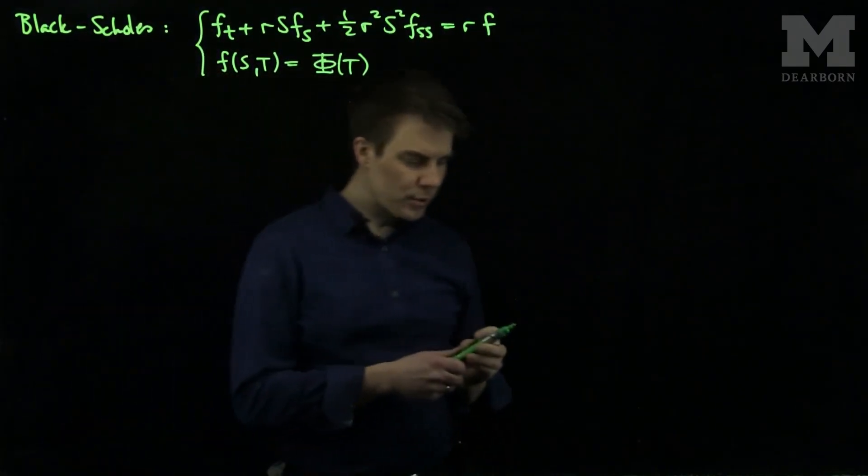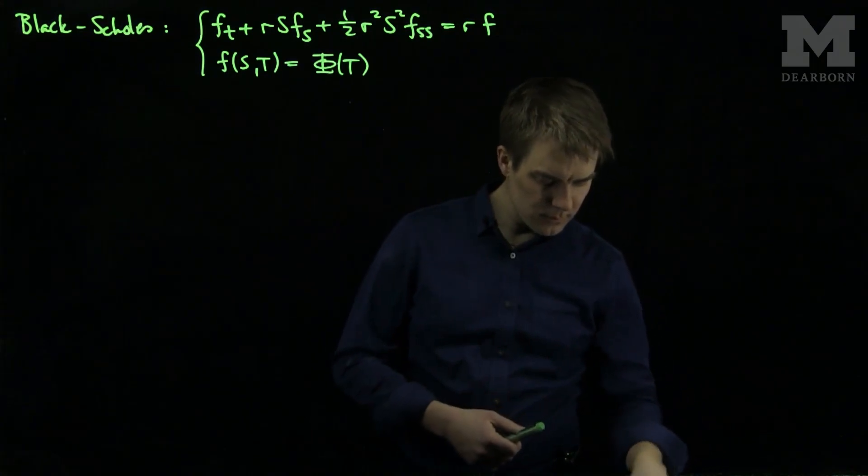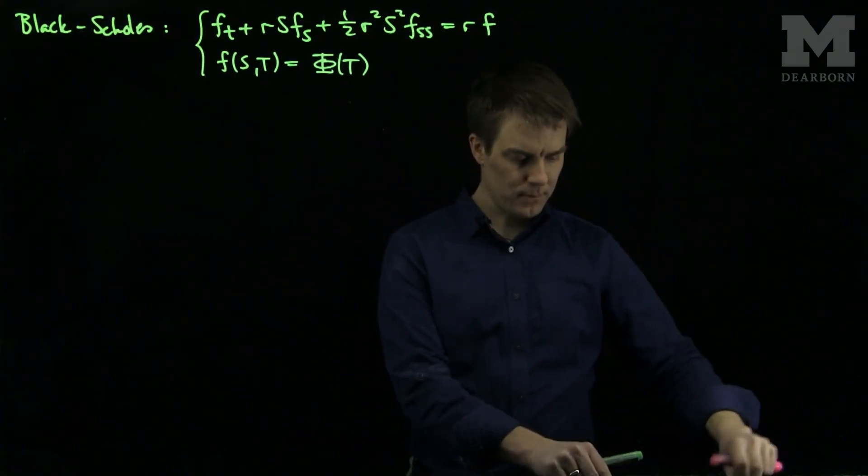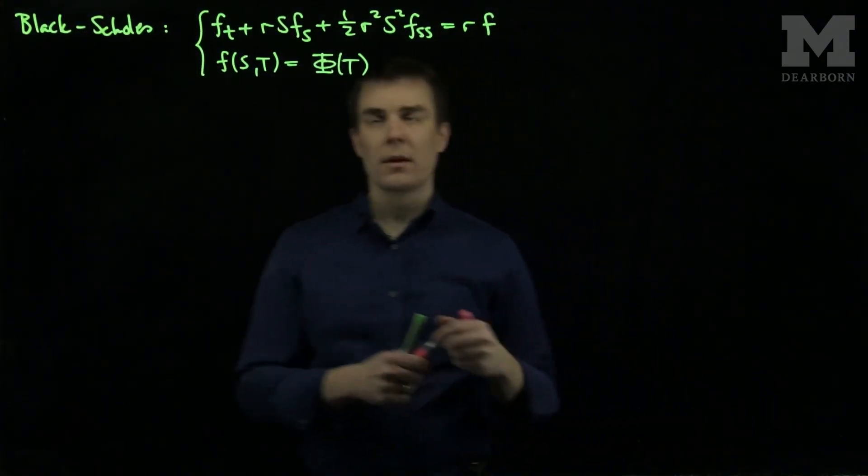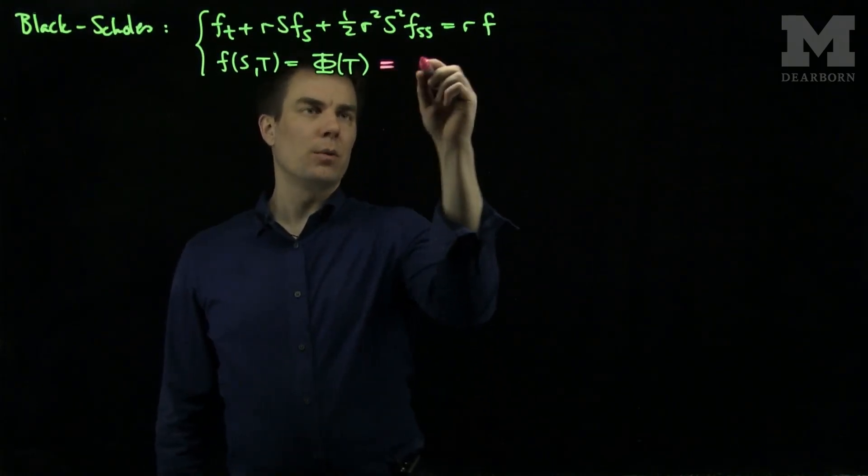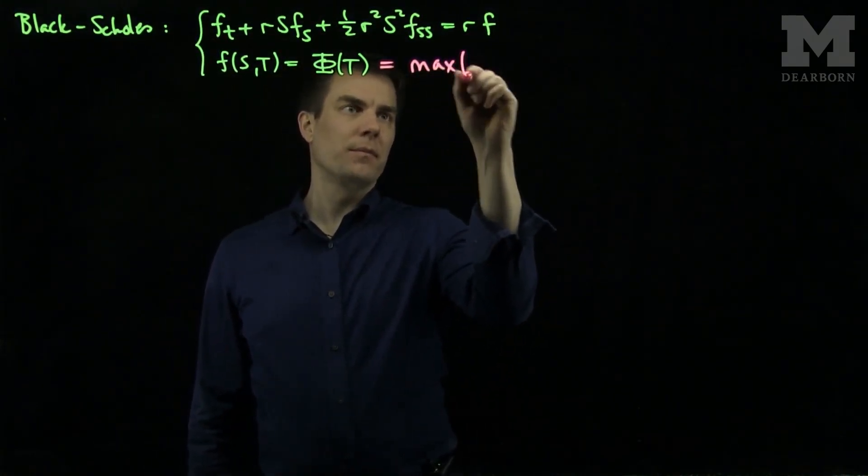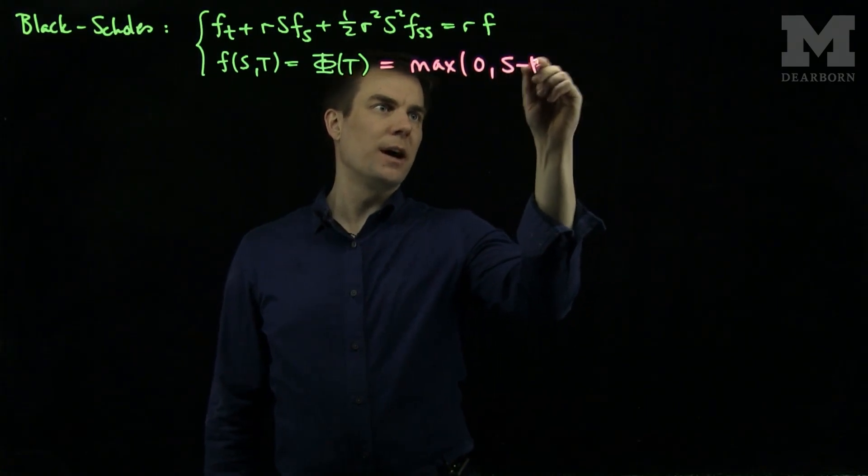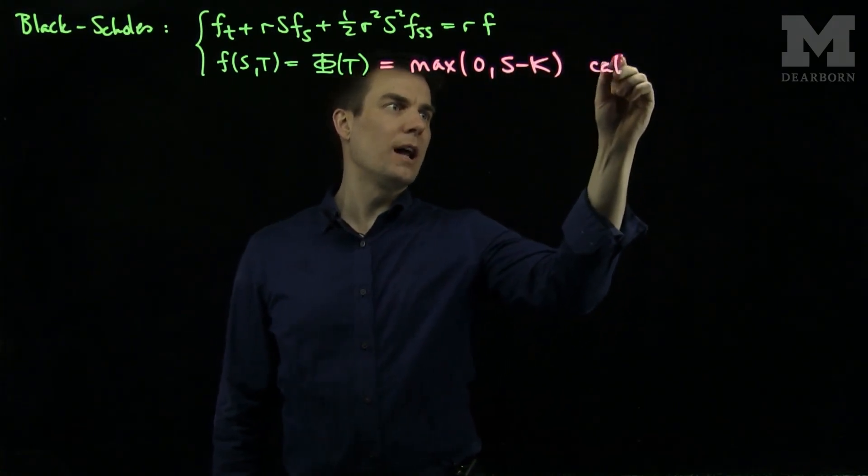In particular, for a call option, we know that this will be equal to the maximum of 0 and S minus the strike price K for a call option.